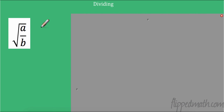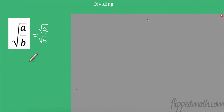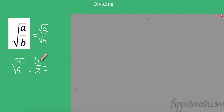A couple of things to realize about dividing. If two things are under the same radical, just like when we multiply, we can separate them. Instead of the square root of a over b, we can write the square root of a over the square root of b. For example, with the square root of 2 over 9, we can write the square root of 2 over the square root of 9, which equals the square root of 2 over 3.